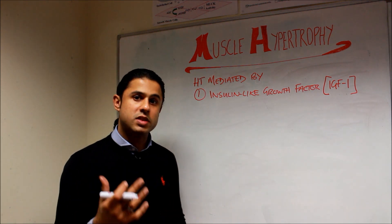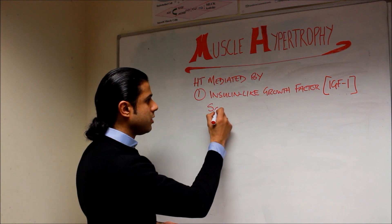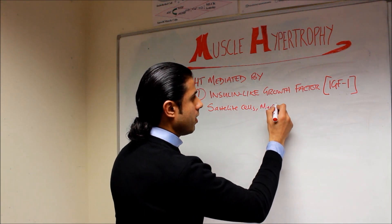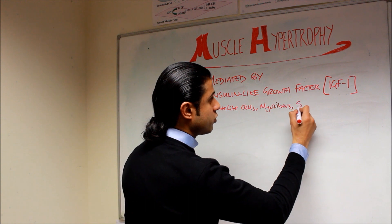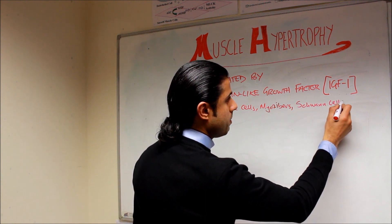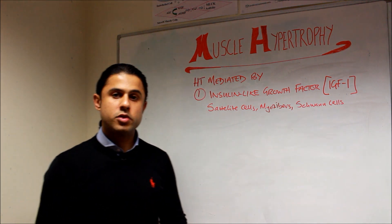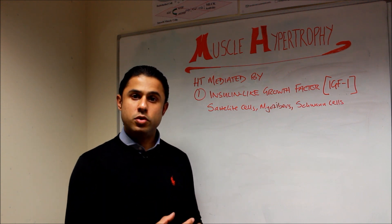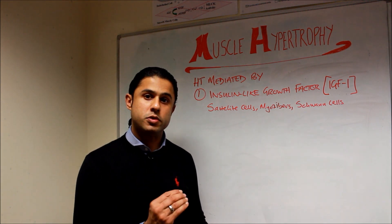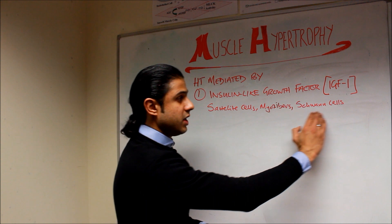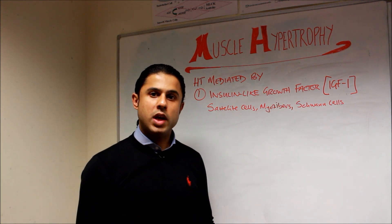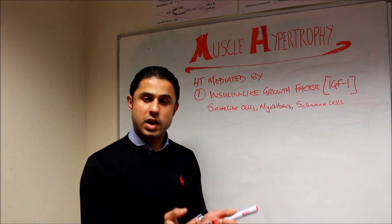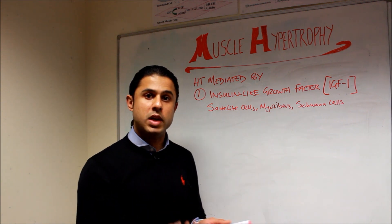IGF-1 is found in satellite cells, in myofibers, and importantly in Schwann cells as well. Schwann cells are located on our nerves and are involved in the transmission of electrical impulses to different parts of the body, particularly the muscle. An increase in Schwann cell activity causes better conduction of the electrical signal to the muscle, and when you get a summation of those signals you have a stronger muscle contraction because more motor units are recruited.